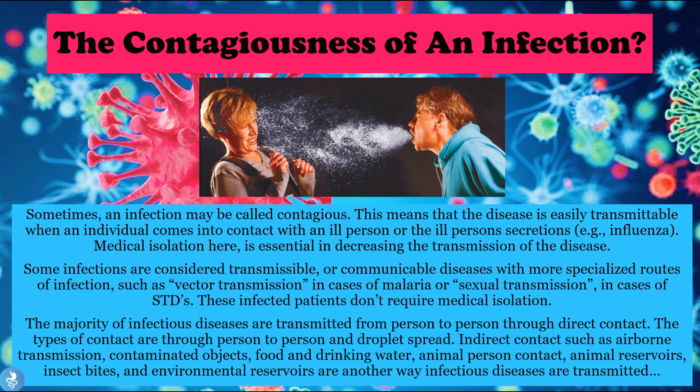The majority of infectious diseases are transmitted from person to person through direct contact. The types of contact include person-to-person and droplet spread, indirect contacts such as airborne transmission, contaminated objects, food and drinking water, animal-to-person contact, animal reservoirs, insect bites, and environmental reservoirs.